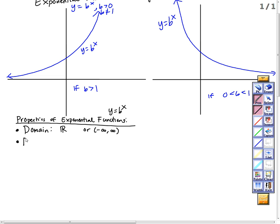What is the range? If you look at the pictures, what y values does this attain? If I continue this graph on forever, will it hit every y value? Will I get positive y values? Yes. Will it hit every positive y value? Yes. Will I ever get y equals 0 for either of these? Will y ever be negative? It doesn't look like it with my picture.